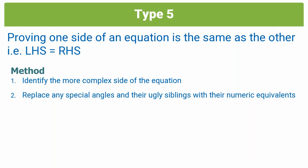Step two: you've identified this side of the equation. Now you're going to work with it and replace any special angles and their ugly siblings with their numeric equivalents. So let's say on the more complex side you saw sine 30 — you'd replace that with a half. Or let's say you saw cos 330 — we know that's equal to root 3 over 2. That's what you'd replace each of those with. That's what I mean by step two.